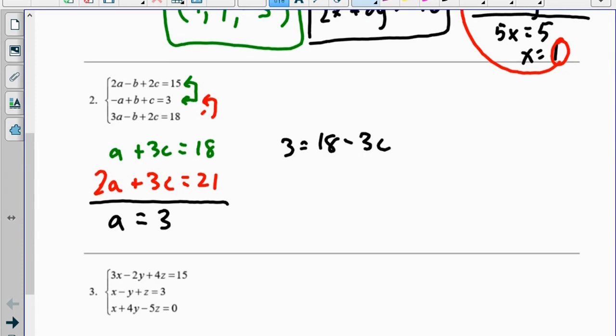and I can end up solving here. So 3 plus 3c equals 18, subtract the 3 over, and then divide by 3, I get c equals 5.